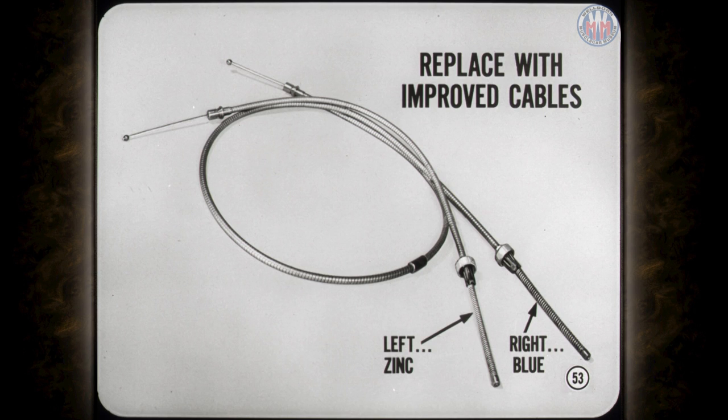On 11-inch brakes, it's best to replace with the improved type brake cables. They're easy to identify because the spring on the left side assembly is zinc-colored and the one on the right is blue. Always install them in pairs. If you mix new and old type cables, you can cause brake drag.